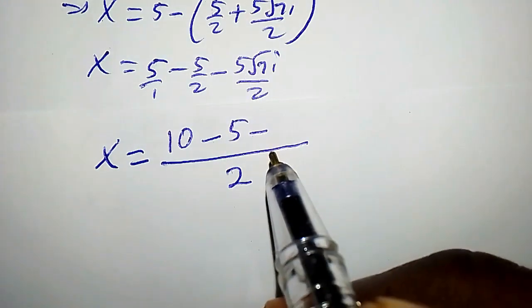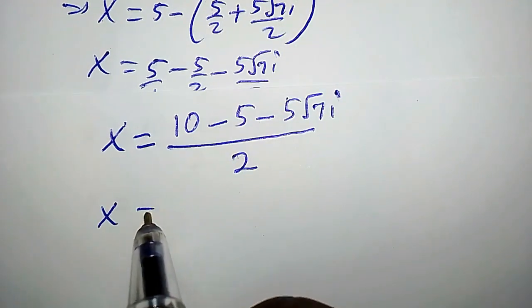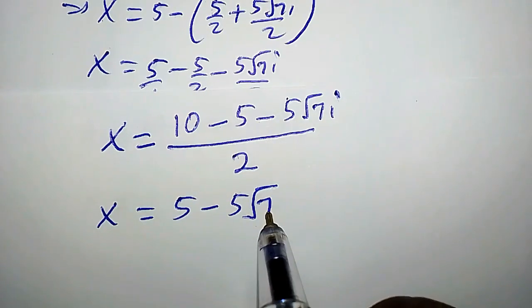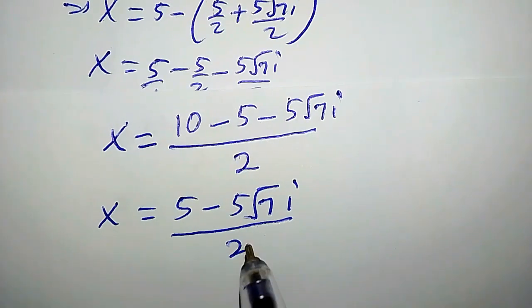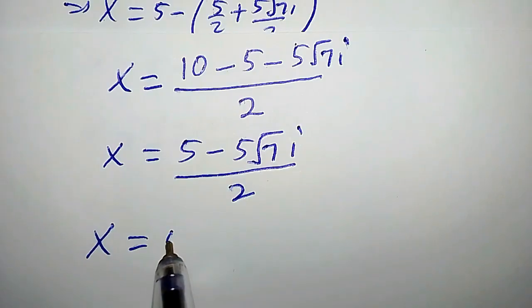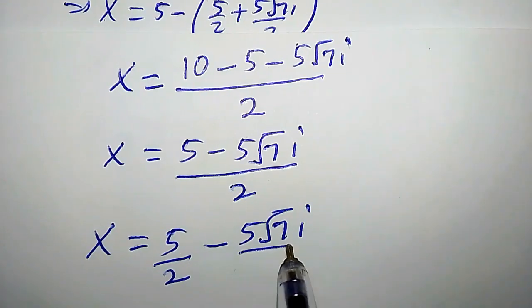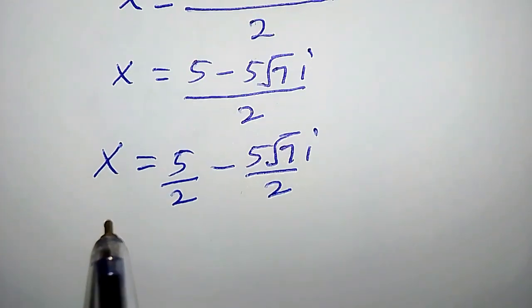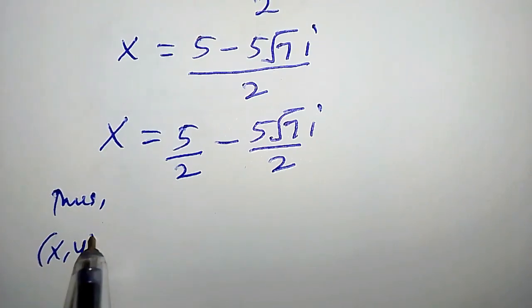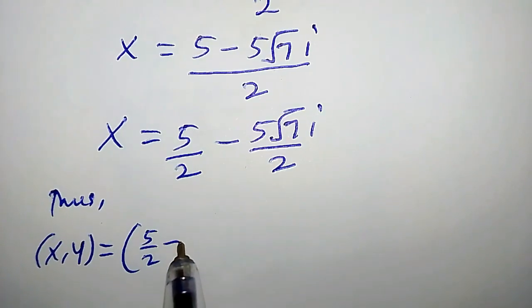The common denominator is 2, so 5 becomes 10 over 2. Then x equals 10 over 2 minus 5 over 2, which is 5 over 2, minus 5 root 7i over 2. So x equals 5 over 2 minus 5 root 7i divided by 2.